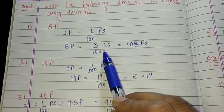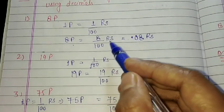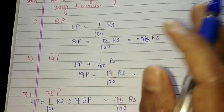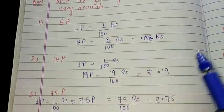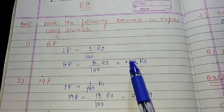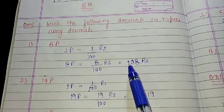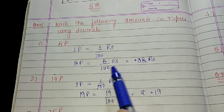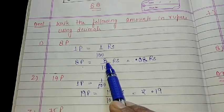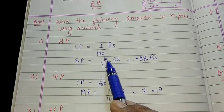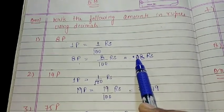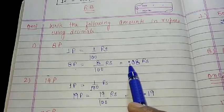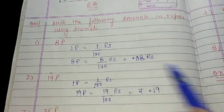Now if we want to convert this into decimal form, we will see downside how many zeros are there — 1, 2 — two zeros are there. Then we will put point before 2 digits. Here 8 is only 1 digit, so I will make it 2 digits by putting a zero: 0, 8. Then I count 1, 2 and before 2 digits I will put the point.